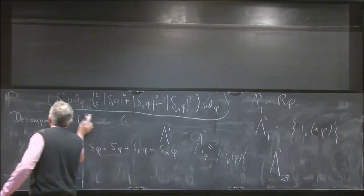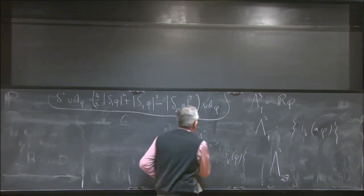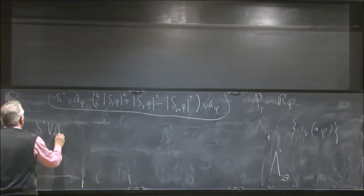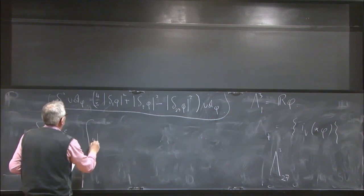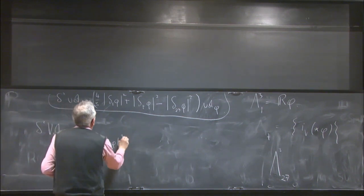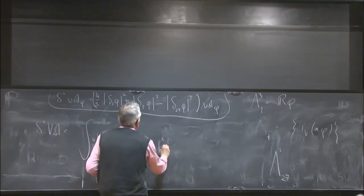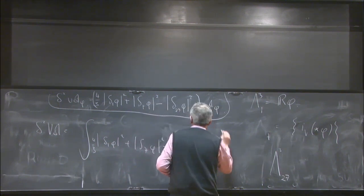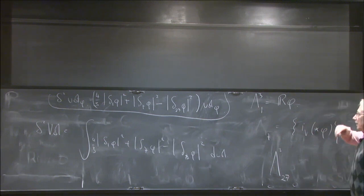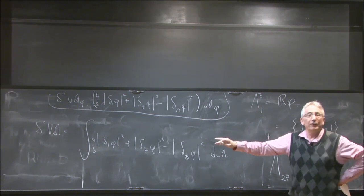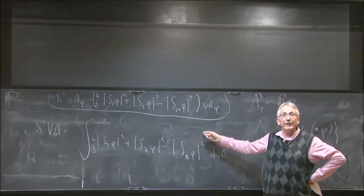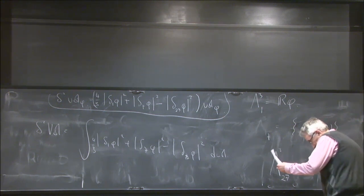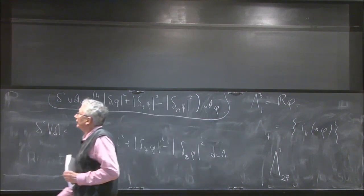The global version of the same thing is to say: if we take the second variation of our volume function at a critical point, it will be the integral of the same expression. The claim is that for variations in a fixed cohomology class, this is in fact always negative. That's what we're saying. To understand that, we need to proceed to Hodge theory — we want to understand the relation between the decomposition of forms and the exterior derivative.